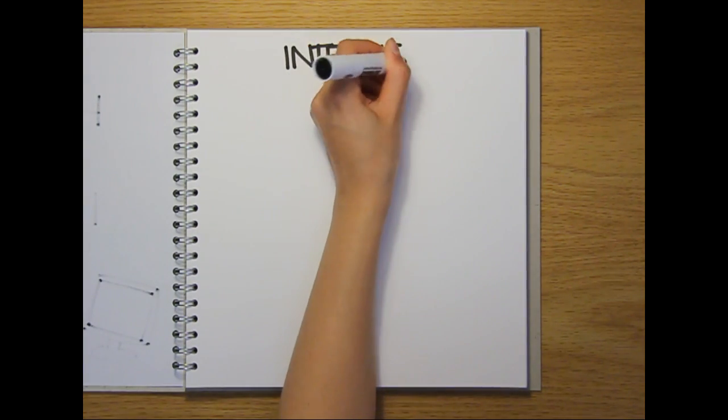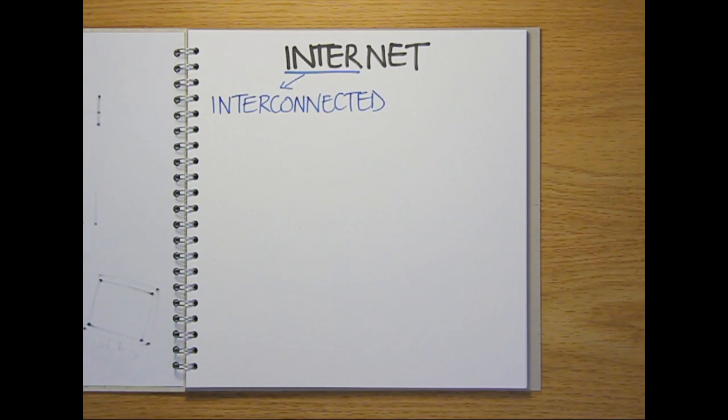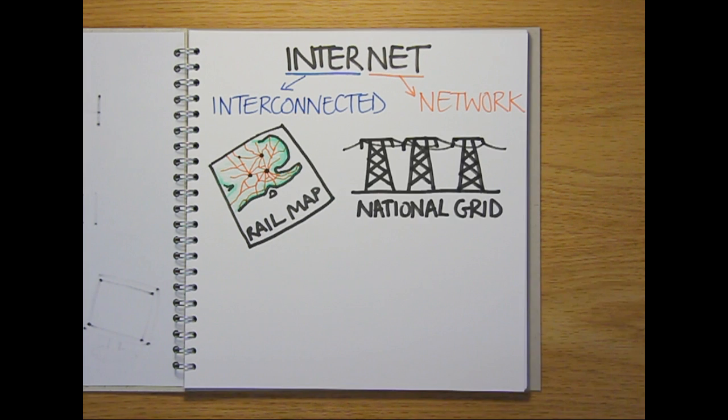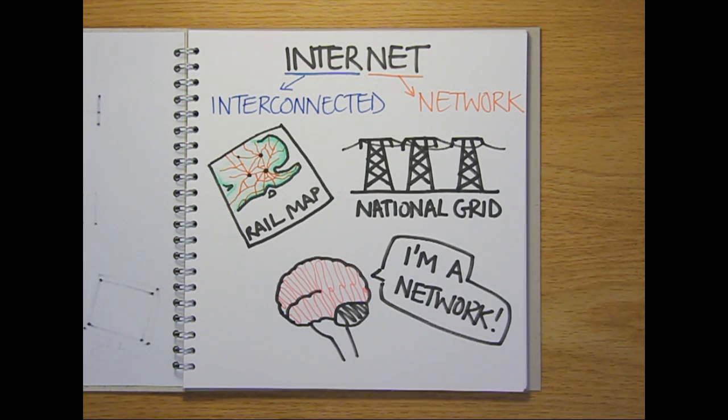The term internet is a shortened form of the two words interconnected and network. Networks are things that are connected together. They include railway and road networks, electricity networks like the National Grid, and the networks of nerve cells found in your brain.